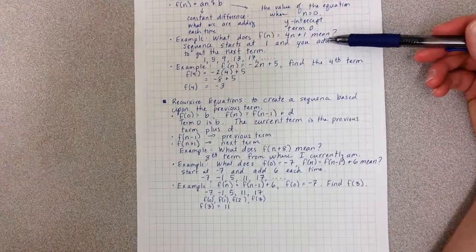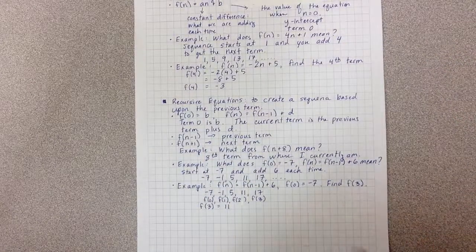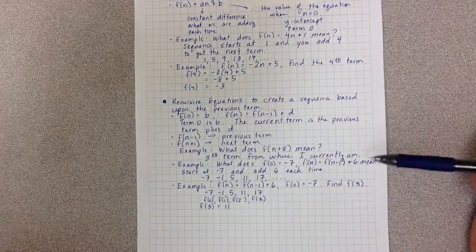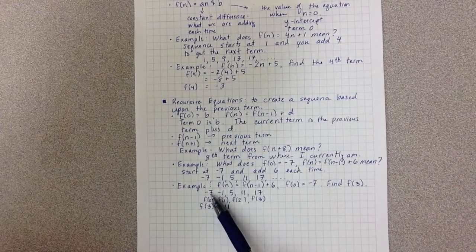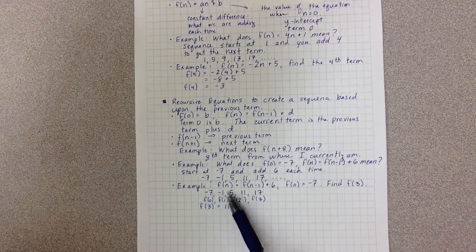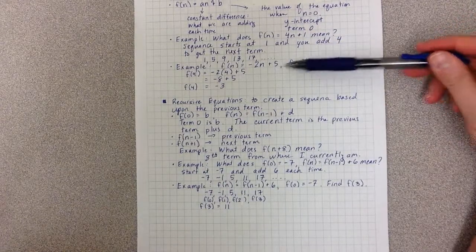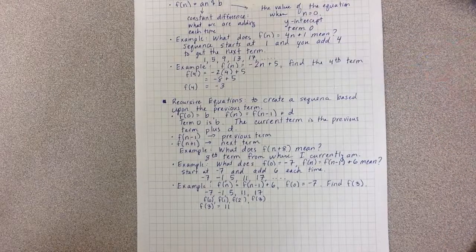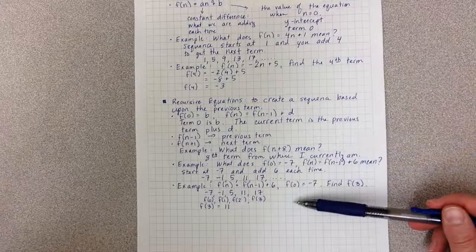So unlike the explicit, in order to find a value in the recursive equation, I'm going to need to actually write out the list of numbers and count terms 0, 1, 2, 3. Where up here in the explicit, all I had to do was just plug it in. So I could find f(10) very easily or f(100) very easily. Here, finding f(100)...